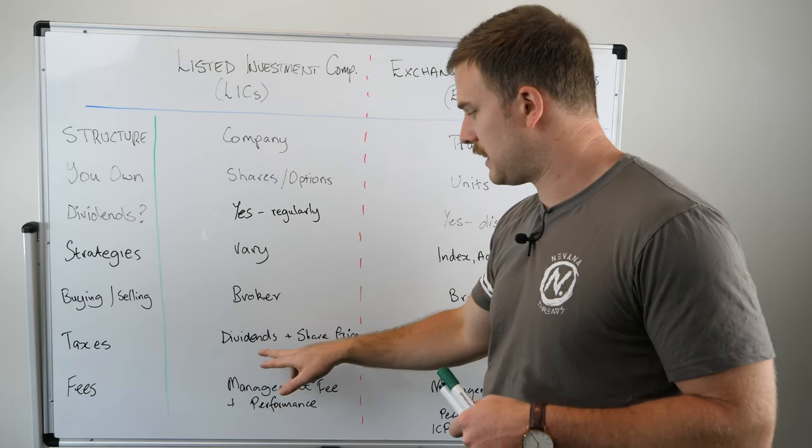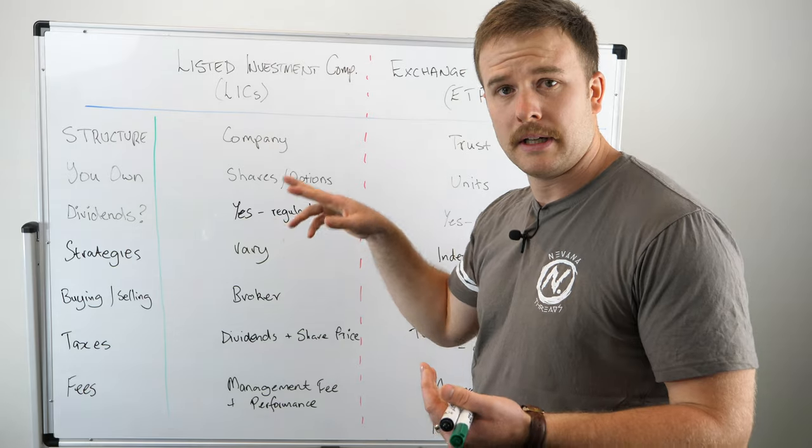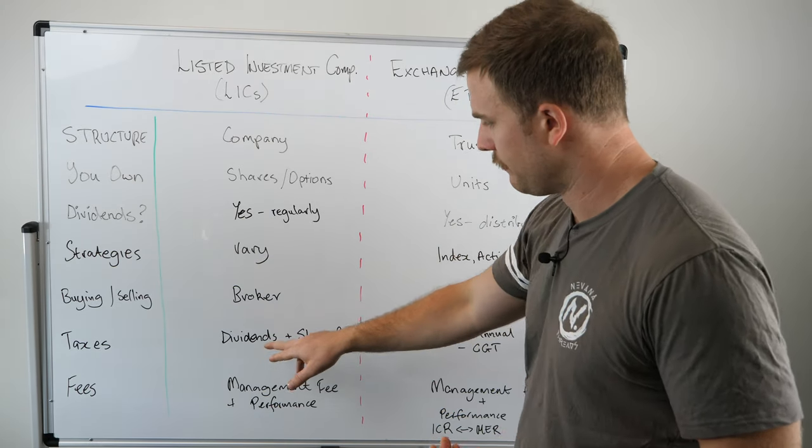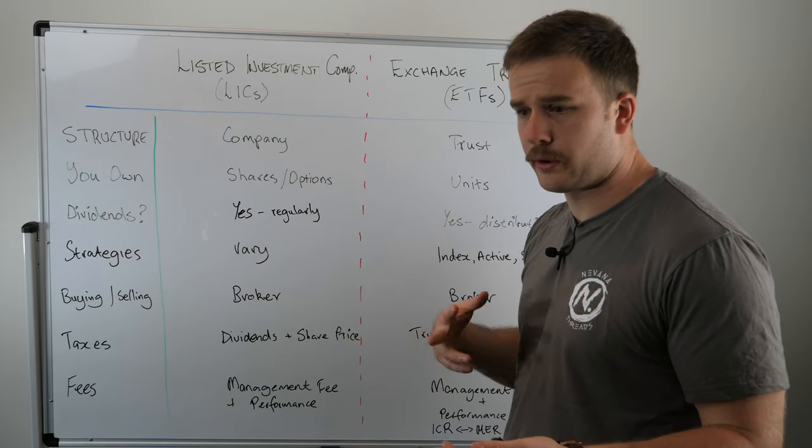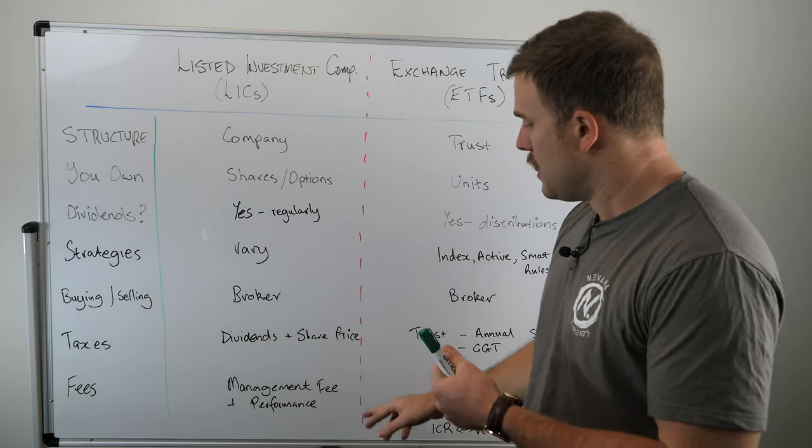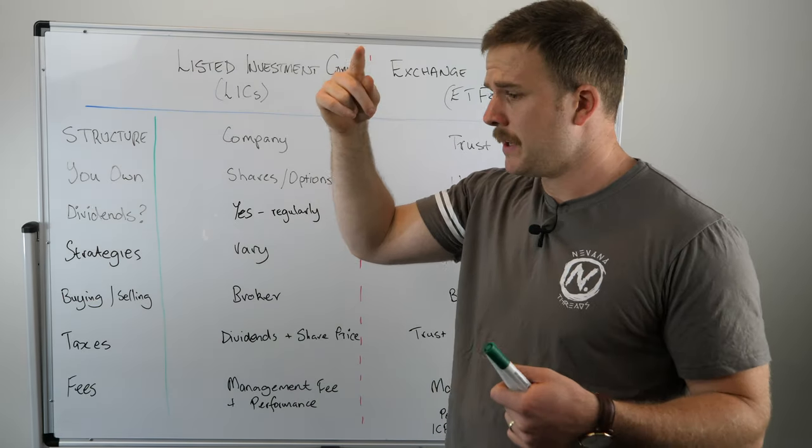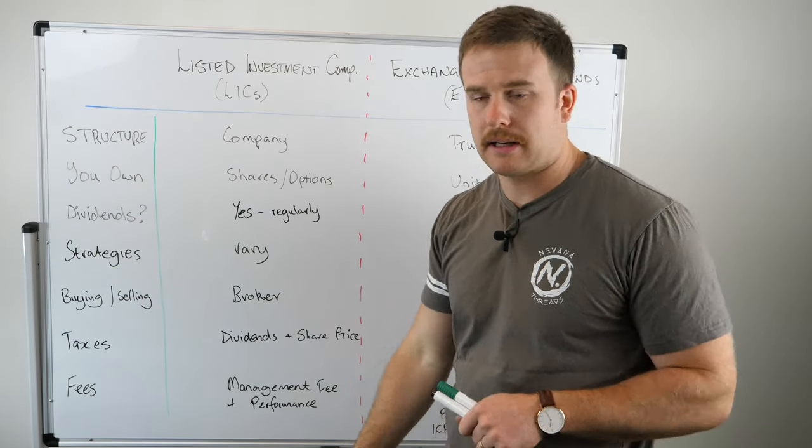In a listed investment company, you're going to get dividends or typically you'll get dividends. You'd get dividends from the company and that might be every quarter, every six months or every year. You'll pay tax on that. You'll also get the benefit if the share price goes up over time and you buy low and sell high, you'll pay capital gains tax.